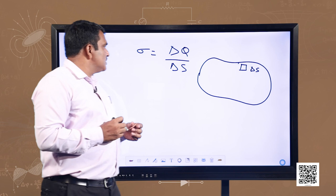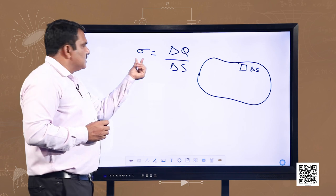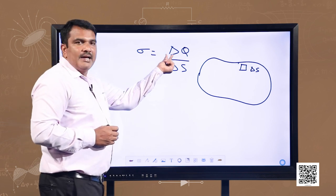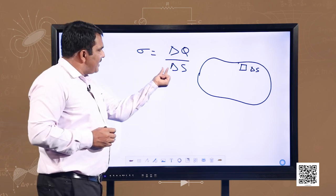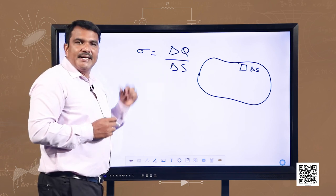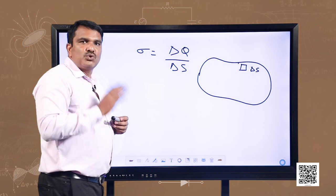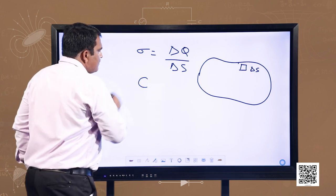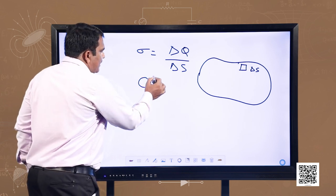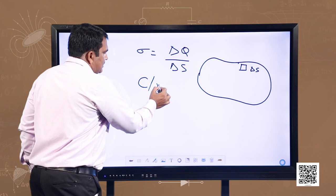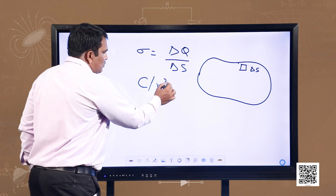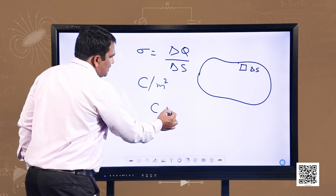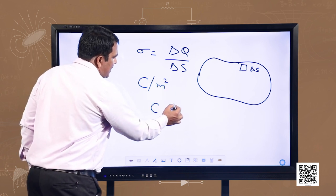The unit of charge is coulomb and the unit of area is meter squared, so the unit of surface charge density sigma becomes coulomb per meter squared, which can also be written as C m⁻².